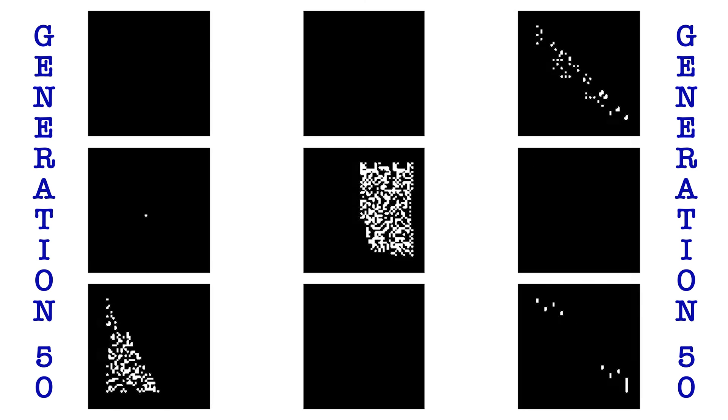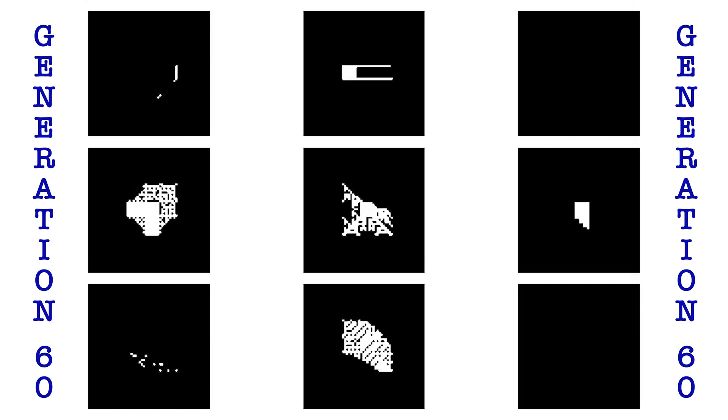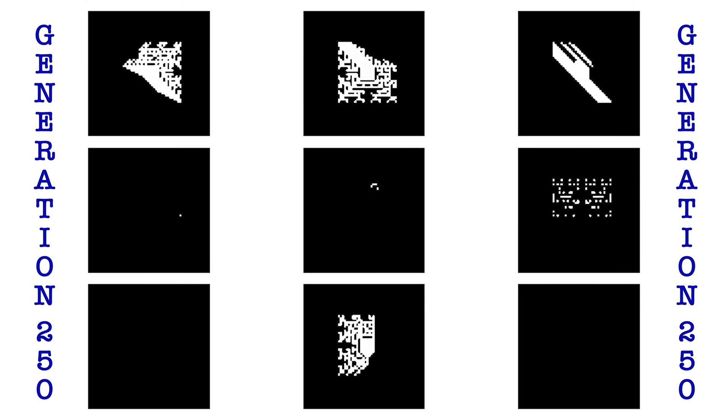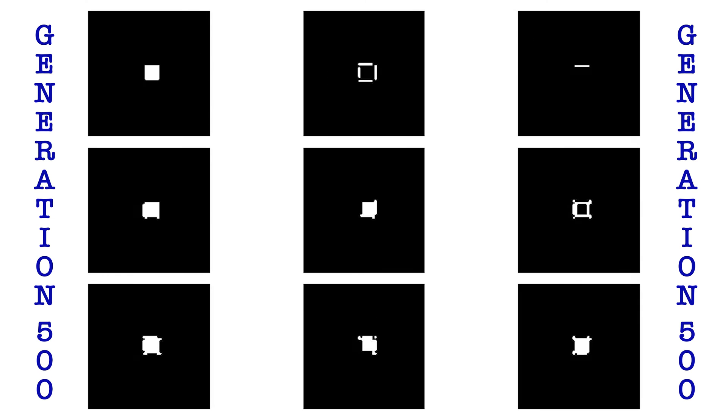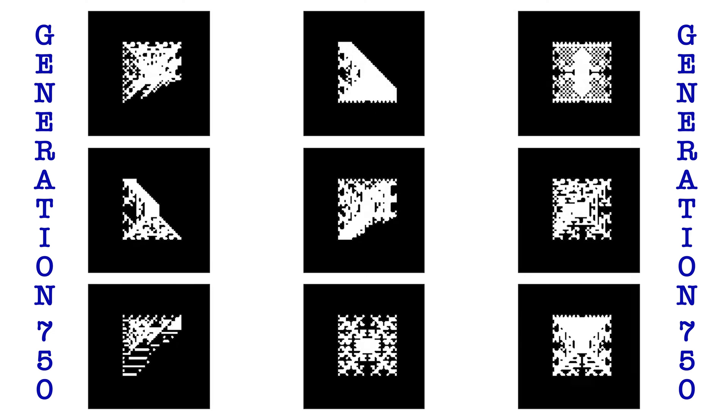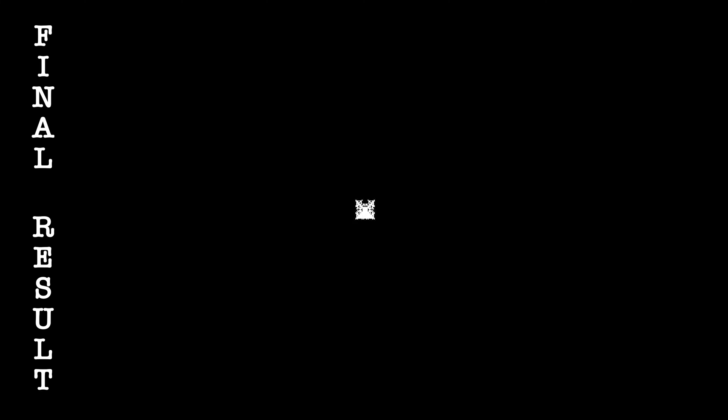As we go on, we see that population members that tend to have a lot of growth are becoming more dominant. As we progress through the generations, we start to zero in on a similar solution across the board. All of these cellular automata start to look the same, because the most dominant trait is being selected for.